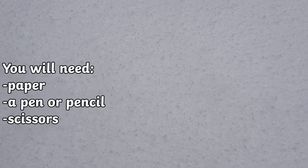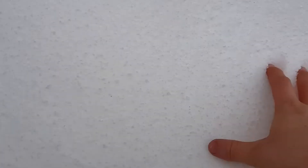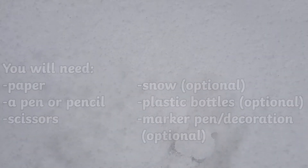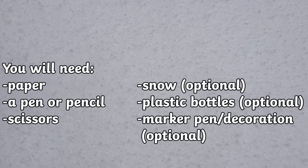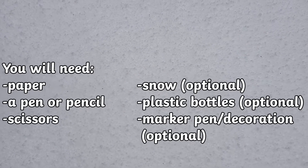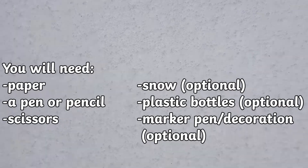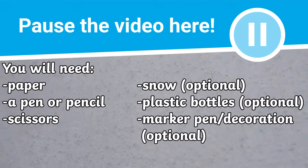Before we start, you might want to check if you have a few things at the ready: paper, a pen or pencil, and some scissors for an activity later. Snow is obviously optional, but if you have snow, then get a few plastic bottles and maybe a marker pen or some decorative items ready for a little experiment.